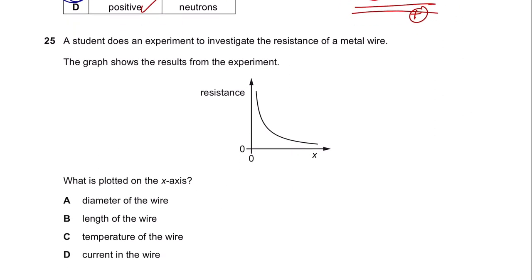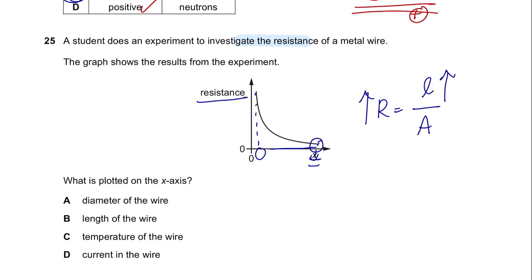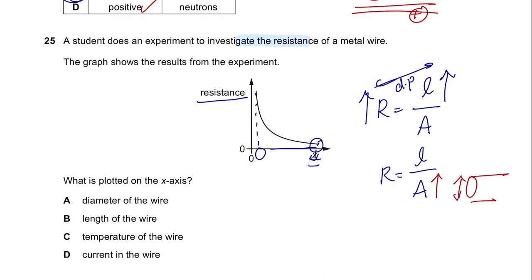Question 25. A student investigates the resistance of a metal wire. The graph shows high resistance at the beginning and as x increases, resistance decreases. Resistance is determined by length and cross-sectional area. When length increases, resistance increases—a directly proportional relationship. However, when cross-sectional area increases, resistance decreases—an inversely proportional relationship.